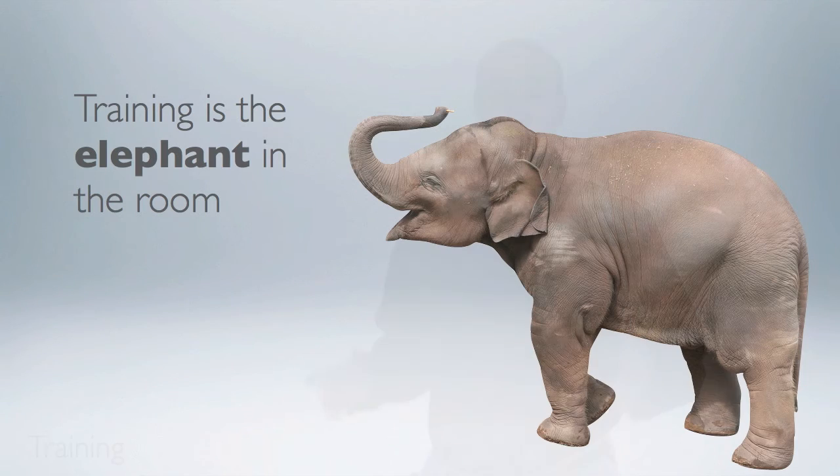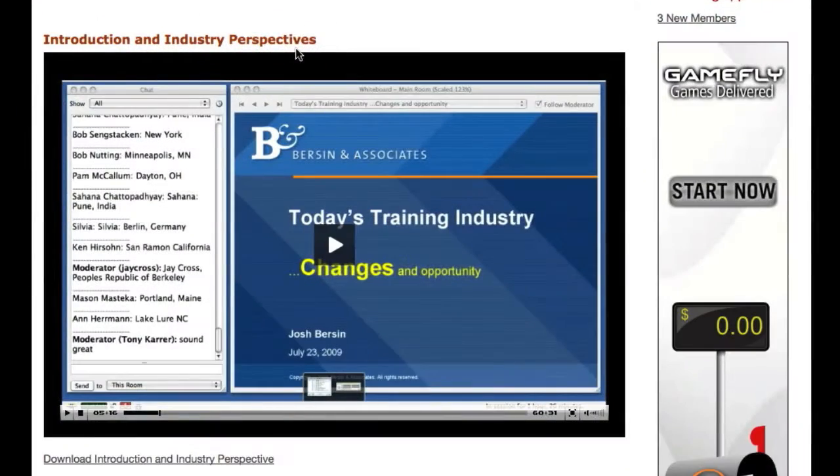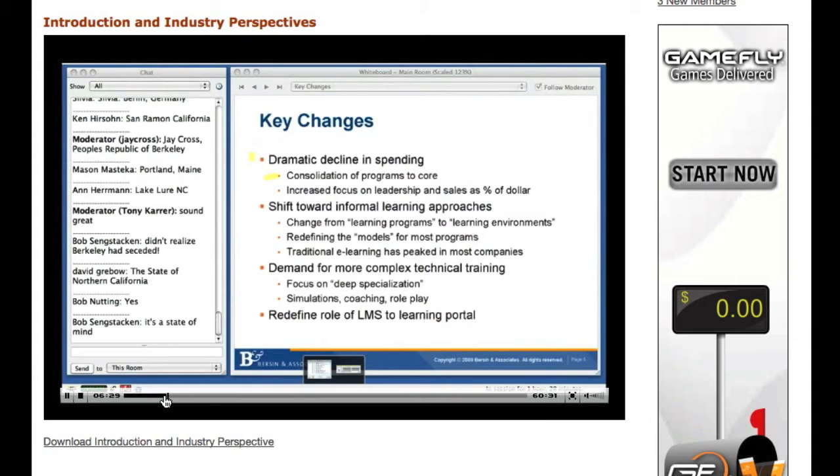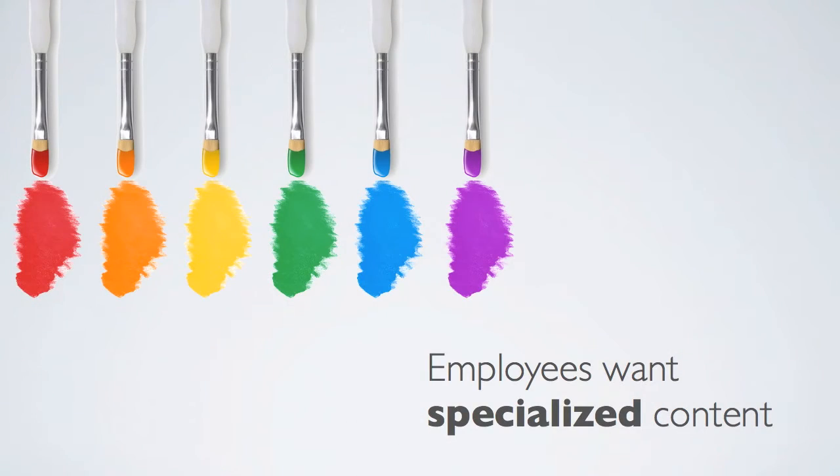The elephant in the room is training. How can screencasting be used for training? The days of the big training departments are over. Josh Burson said during the Future of the Business of Learning Seminar in the summer of 2009 that people want less e-learning. They want more relevancy. They want less off-the-shelf training and more deeper, specialized content. They don't want a generalist instructional designer teaching them. They want to learn from the expert. And they want to learn in a YouTube kind of way.